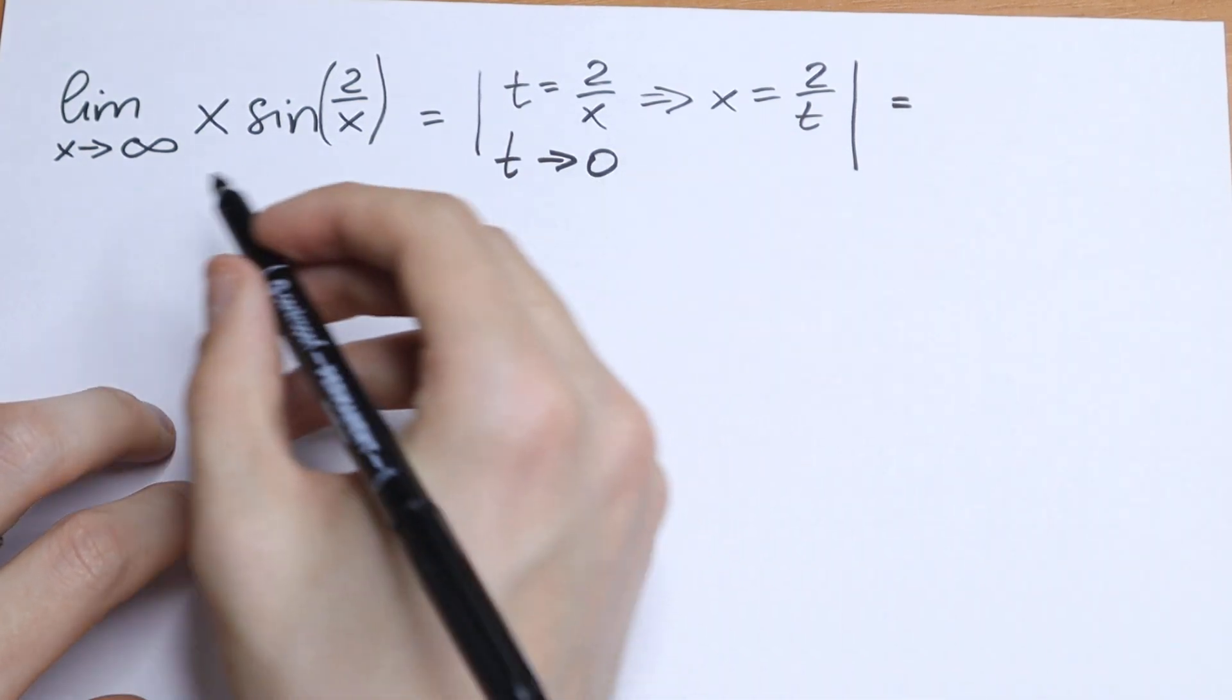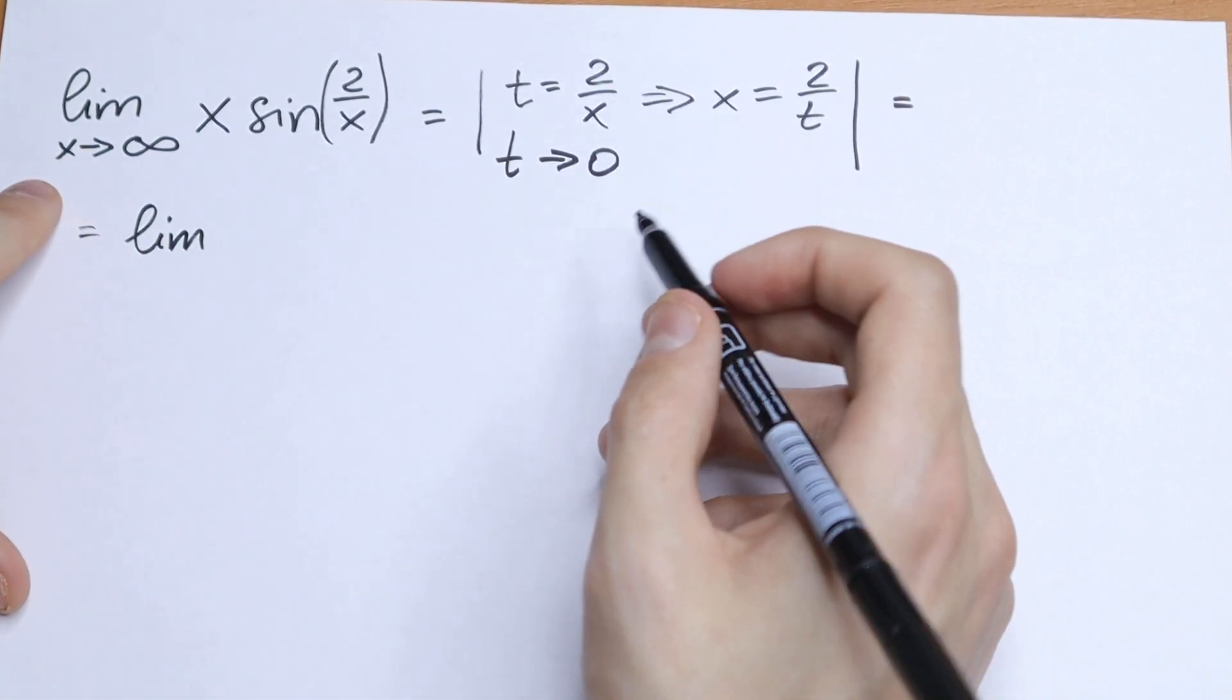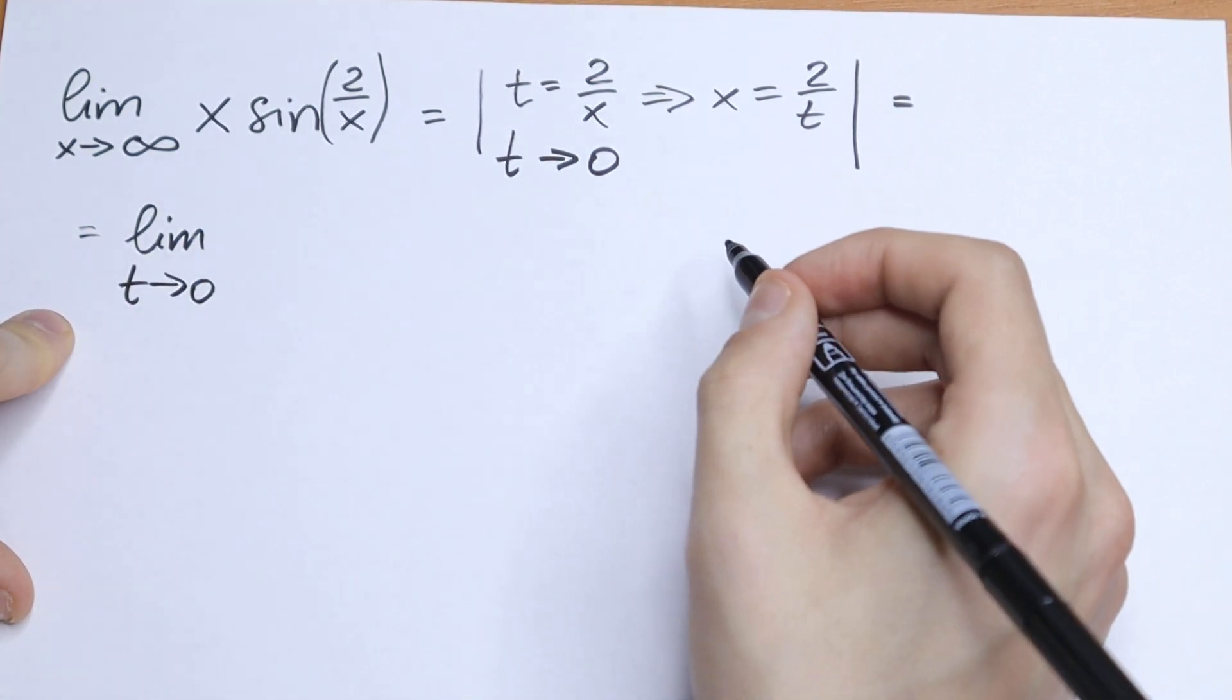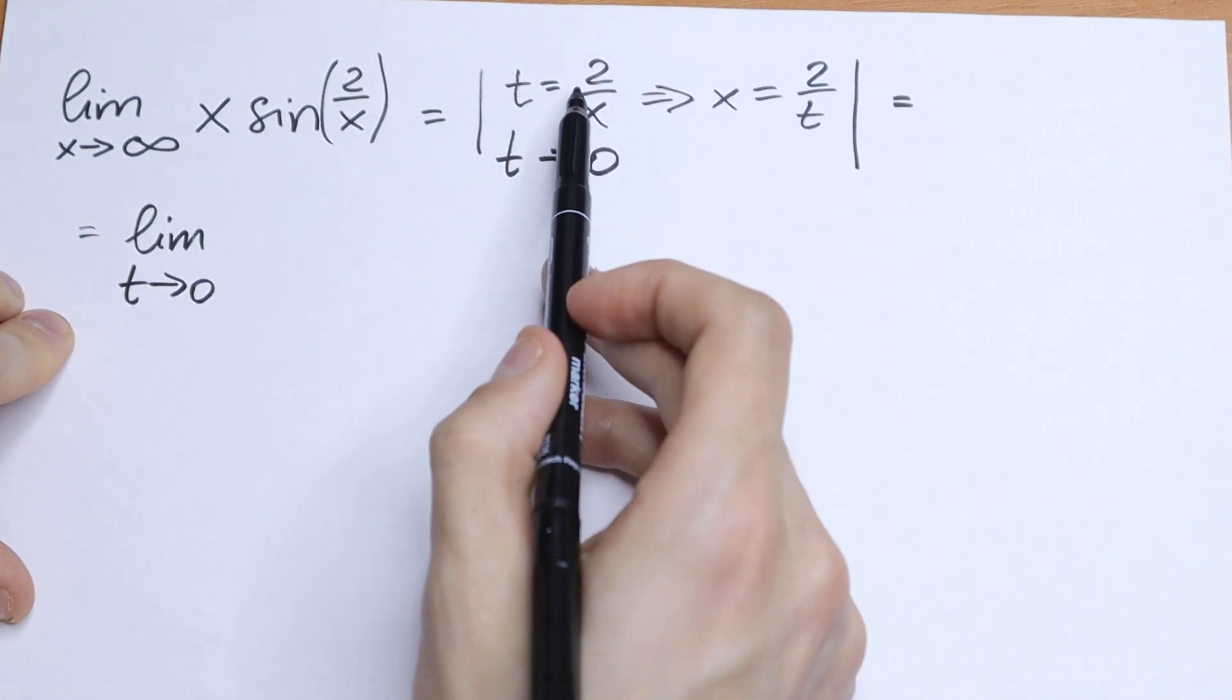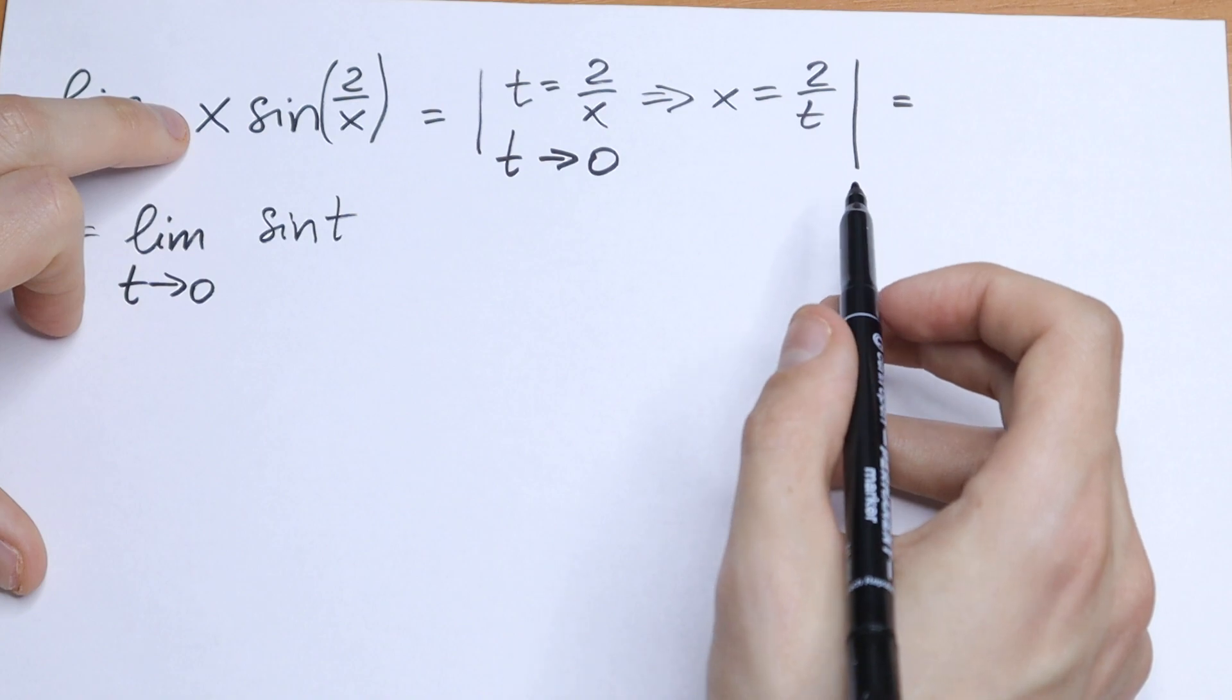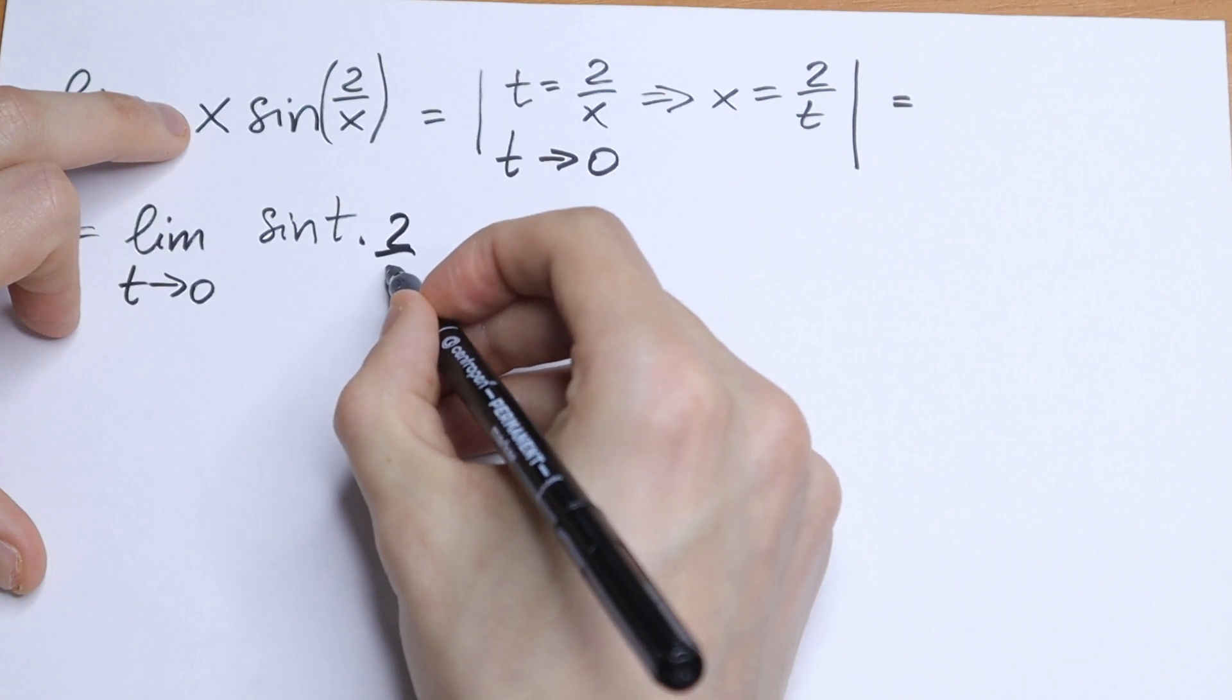So we will have an interesting case. This limit will be equal to limit, but I want to write not with x but with t because we use a substitution right here. So we will have limit t approaches to 0 of the function sine t, because 2 over x equals t. And instead of this x we need to write 2 over t. So we need to multiply 2 over t.